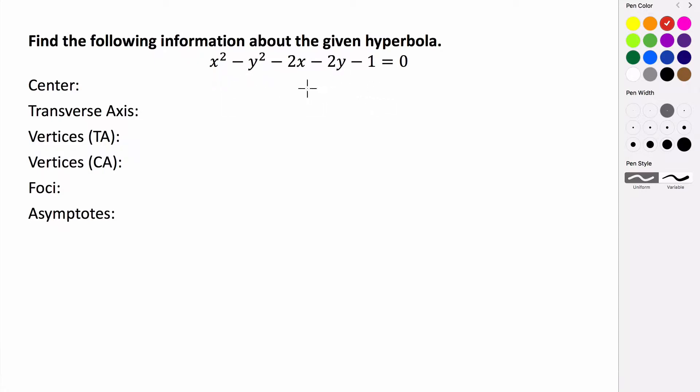Now, before we can start to do that, we have to consider is this going to be a horizontal hyperbola or is it going to be a vertical hyperbola? And to determine that, we have to look at the quantities that are being squared. So we see we have x squared here and we have this negative y squared here.